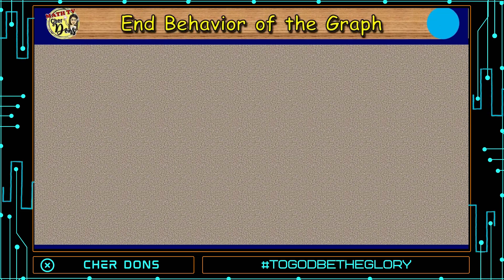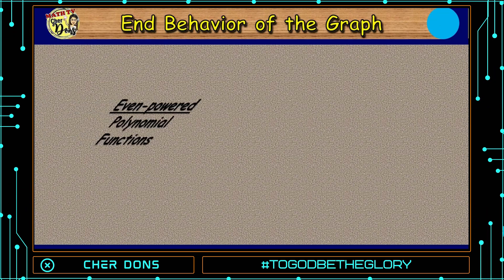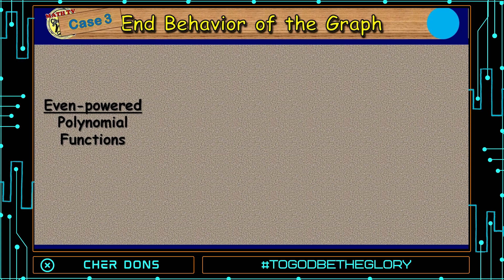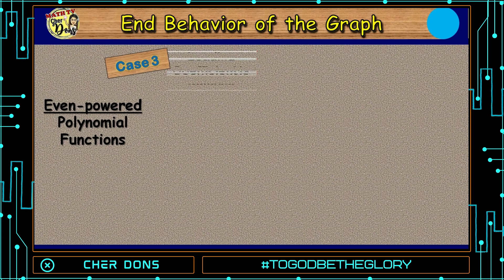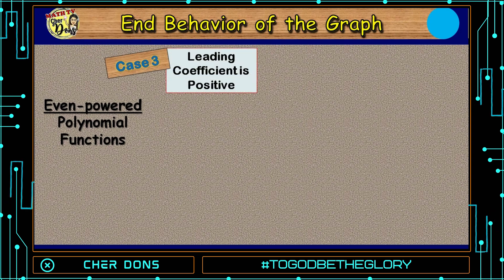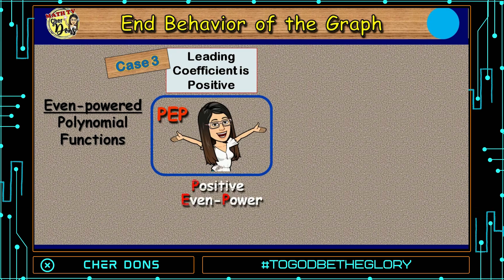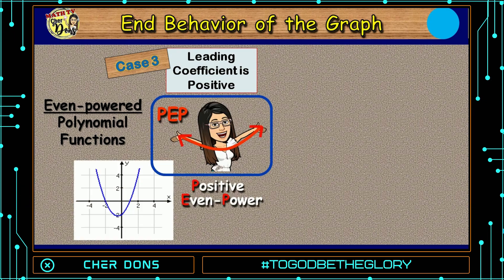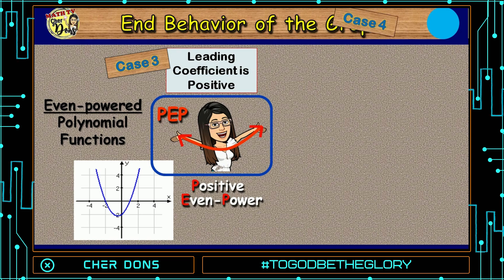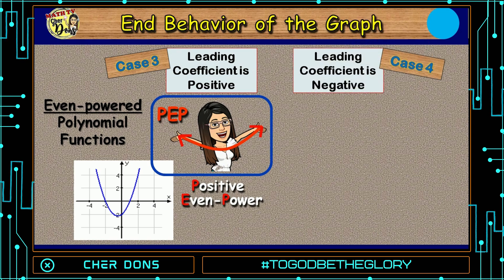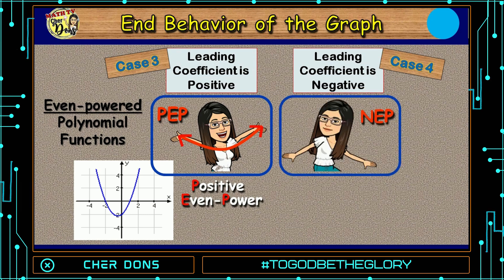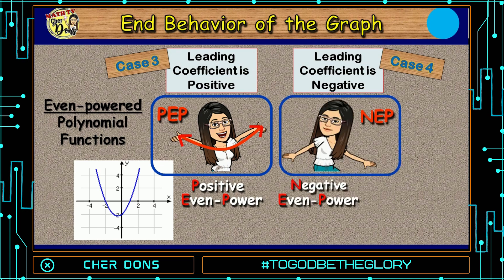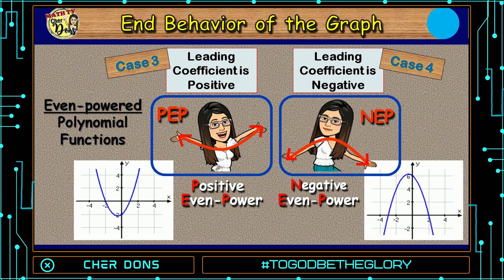For cases number 3 and 4, they are both even-powered polynomial functions. Case number 3: the leading coefficient is positive — let's call it PEP, positive even power. The graph rises to the left and to the right. And for case number 4: the leading coefficient is negative, and it has an even power — we'll call it NEP, negative even power. The graph falls to the left and to the right.